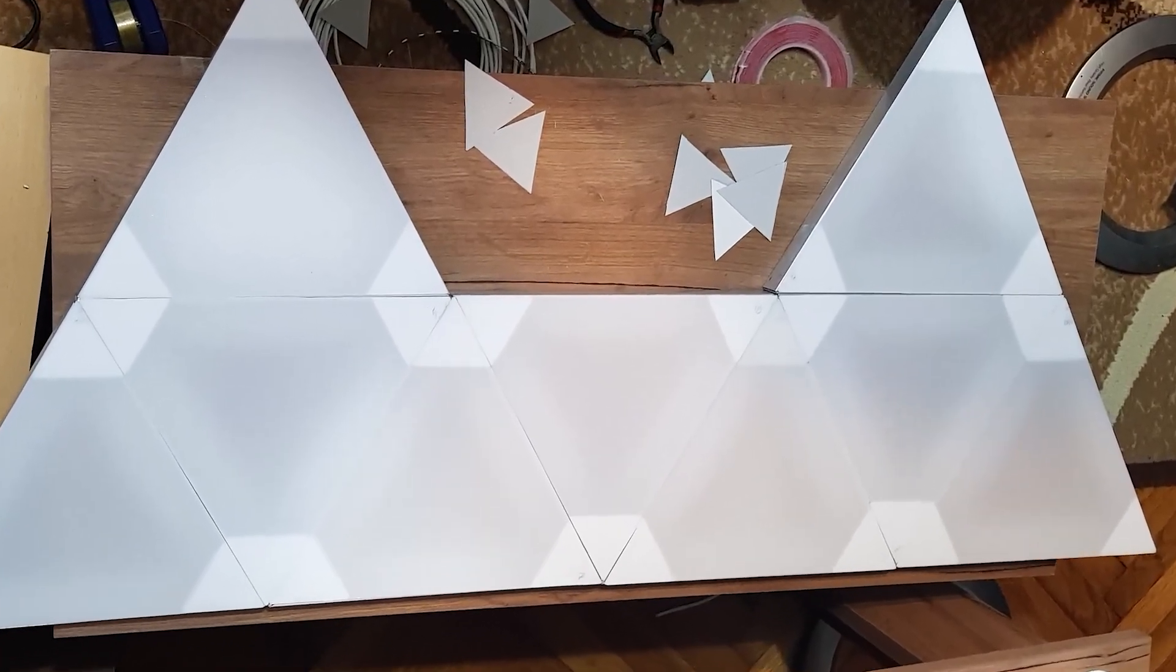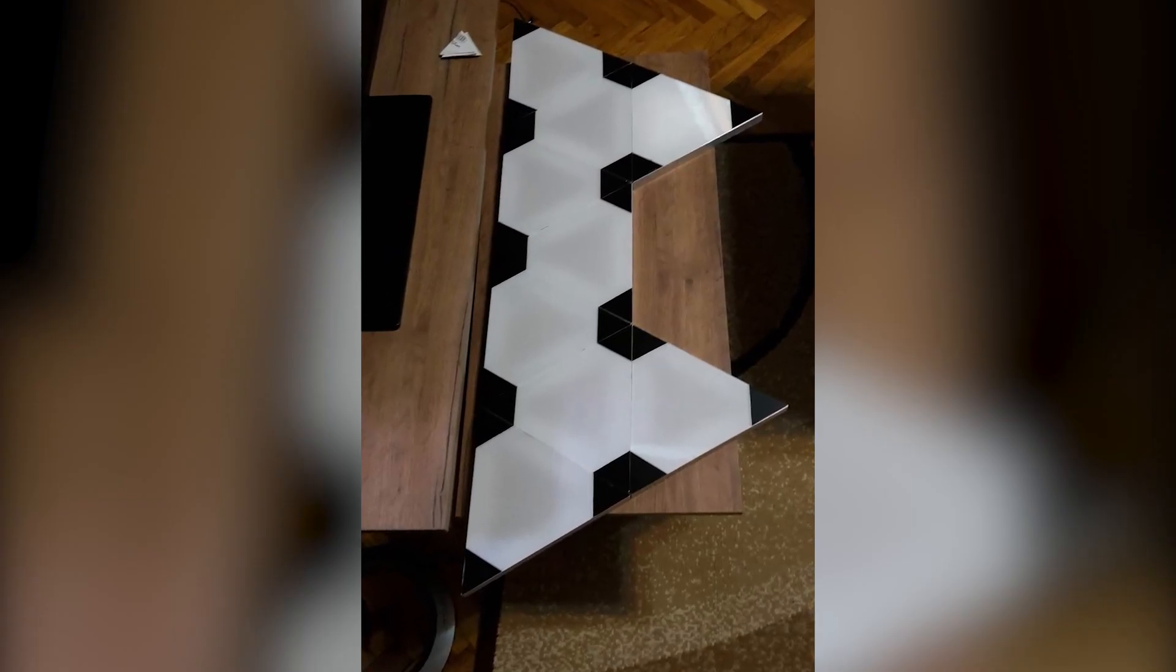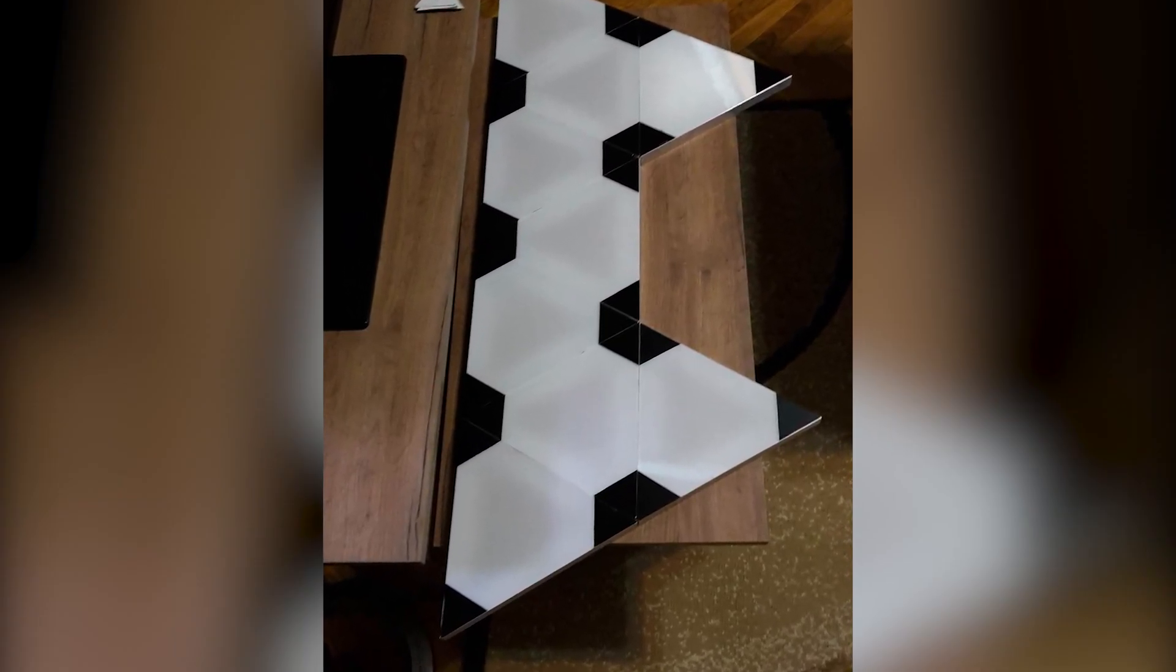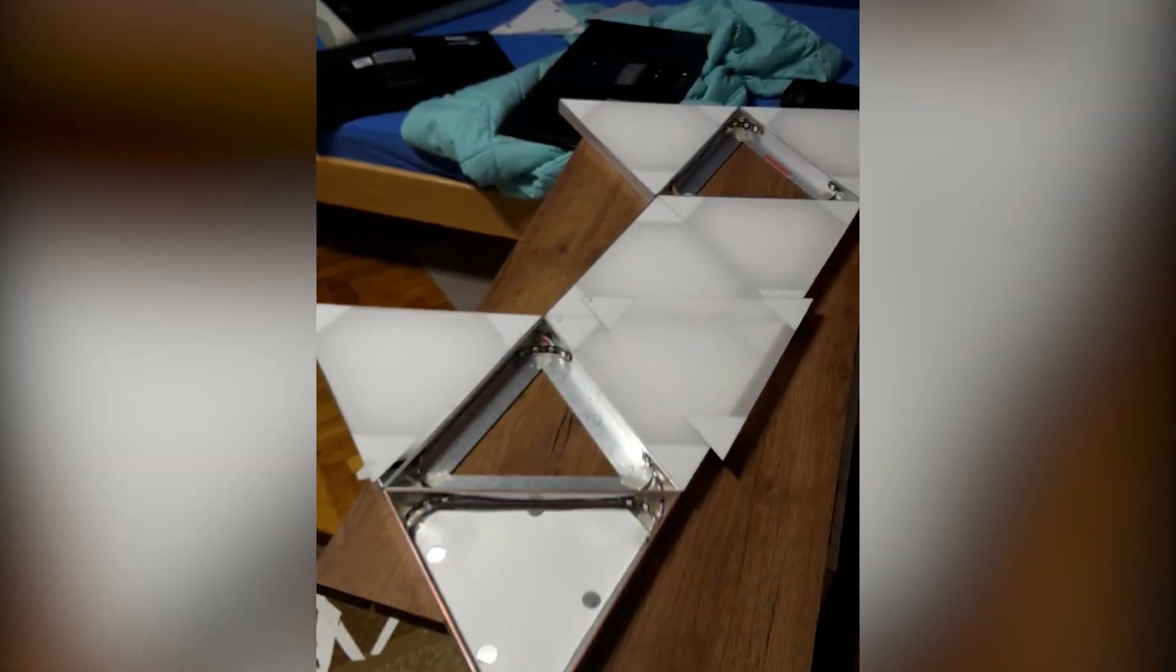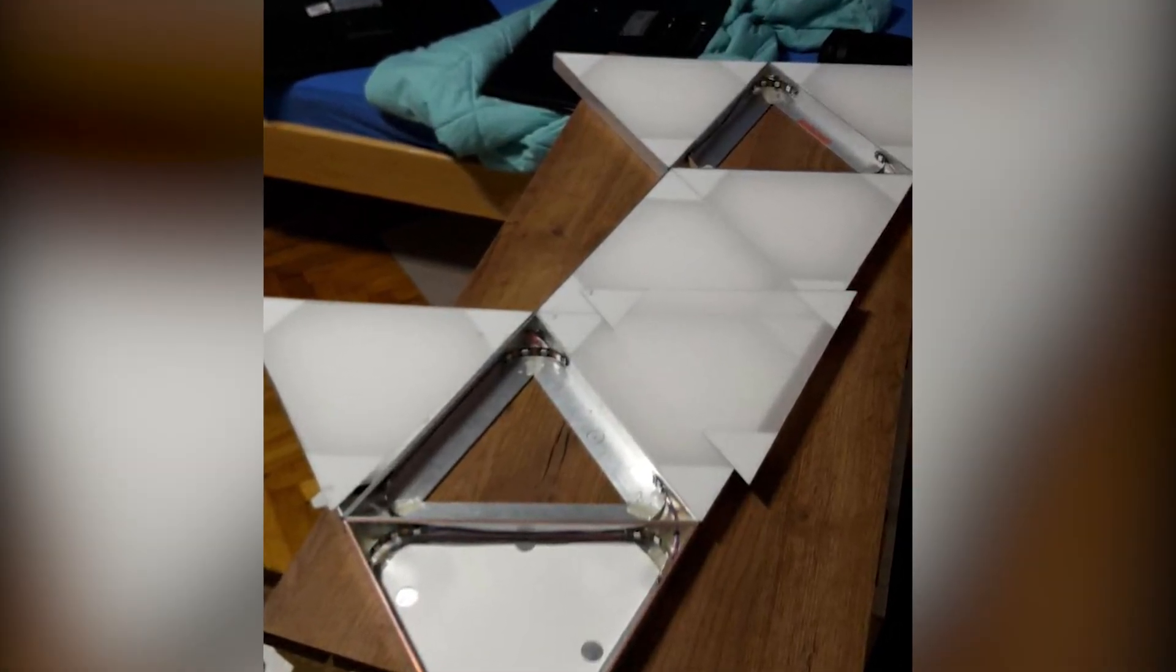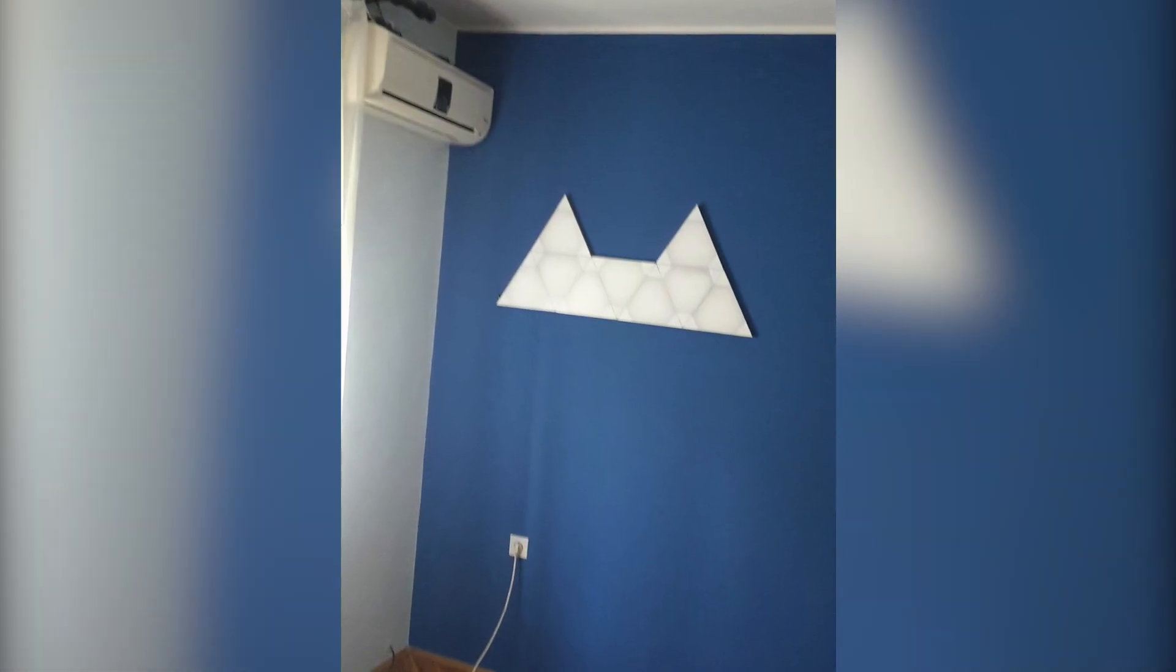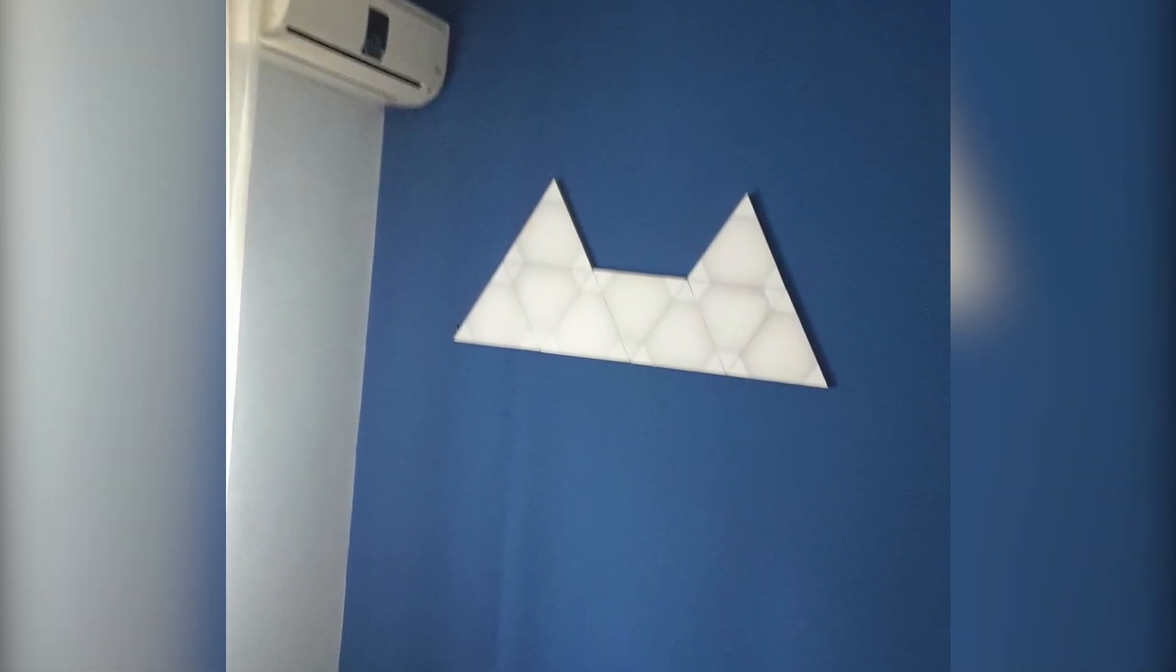So I wasn't home at the end of this project, so my father finished it up. So he did glue the triangles to aluminum using two millimeter double sided tape. He added these white reflective surfaces on the back to spread the light better. And he hanged it on the wall using just two screws. So yeah, that's about it. Now let me show you how it looks.